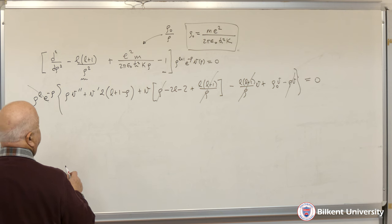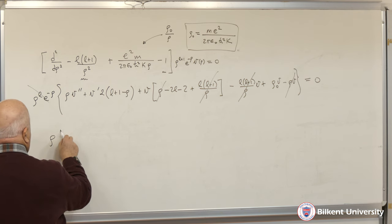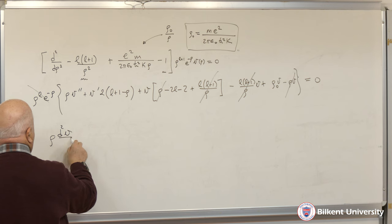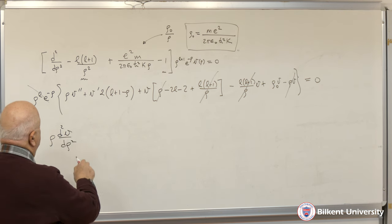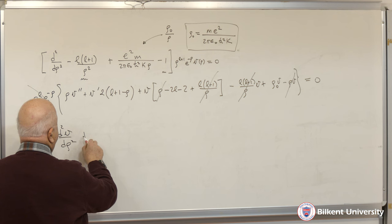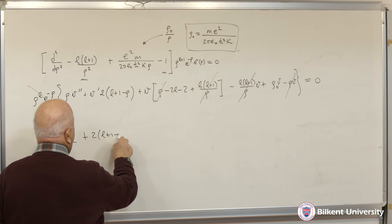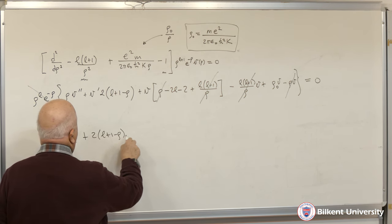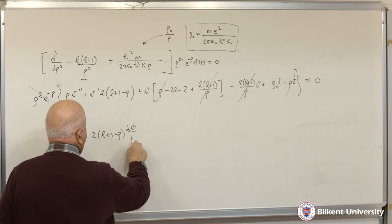After cancellations, the simplified differential equation for V is: ρ · d²V/dρ² + (2L+1 - ρ) · dV/dρ plus remaining terms equals zero.